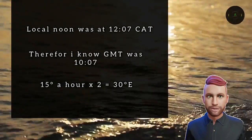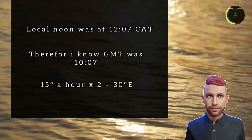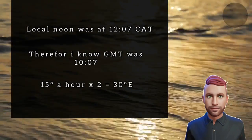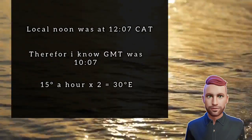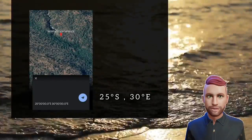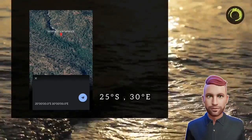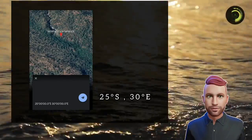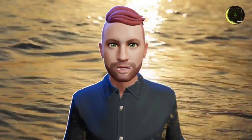So 15 degrees an hour that the Sun moves across the sky, times 2, makes it 30 degrees. And since we are ahead, we would be east. So our longitude would be 30 degrees east. We have just triangulated our position from just the Sun alone: 25 degrees south and 30 degrees east. That's it for today — a quick short to show how you can triangulate your longitude and latitude on a flat Earth using just the Sun and a sextant.